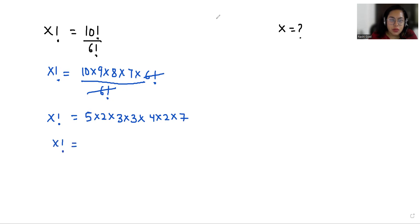x factorial equals, if we group these, we can write this as 2 times 3 times 4 times 5 times 6 (as 3 multiplied by 2) times 7.